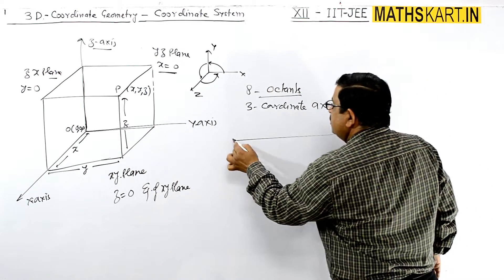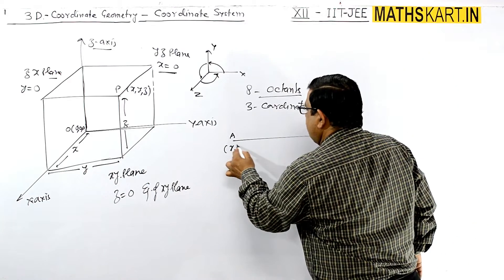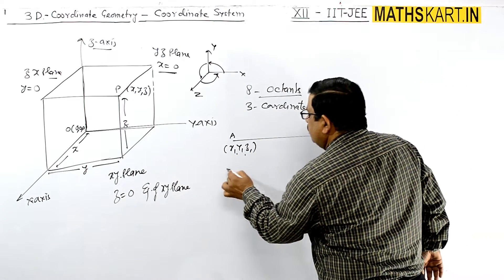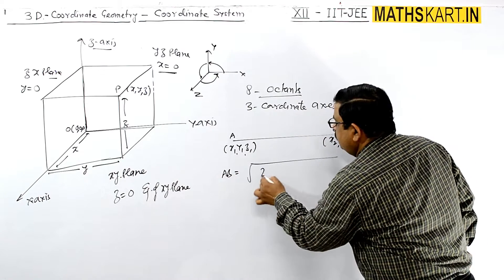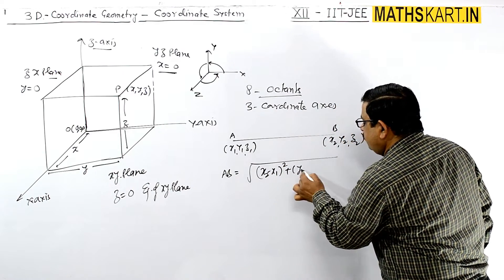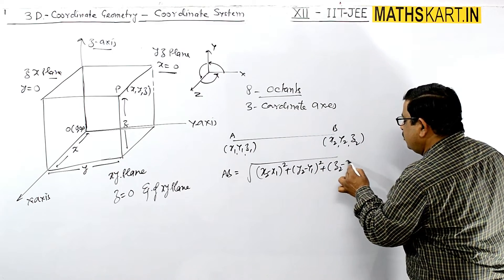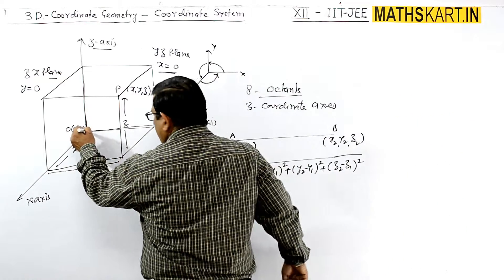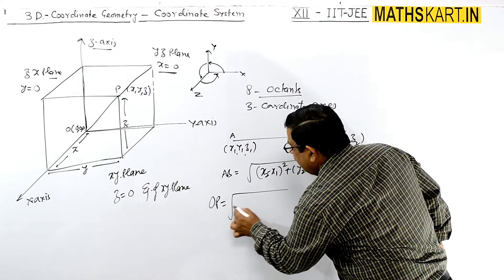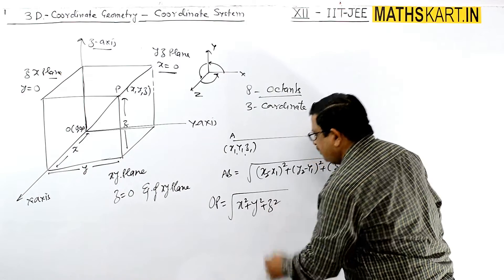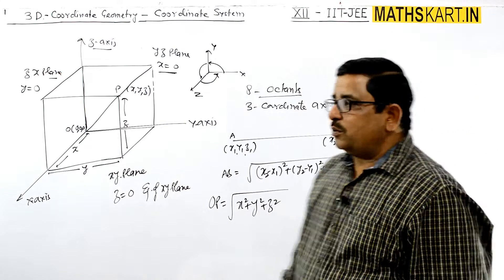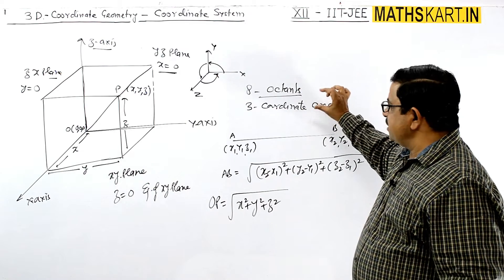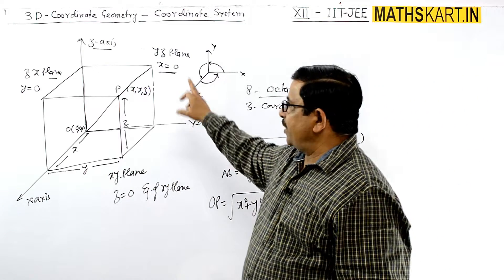The distance formula is very easy. If points A and B are given with coordinates (x1, y1, z1) and (x2, y2, z2), then the distance AB equals the square root of (x2 − x1)² + (y2 − y1)² + (z2 − z1)². This is the distance formula.